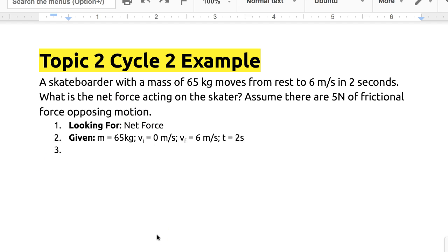What information are we given? Well, the mass of the skater is 65 kilograms, so m equals 65 kilograms. Rest means the initial velocity, so v sub i, i for initial, is 0 meters per second, and the final velocity here is 6 meters per second, and it takes 2 seconds for the skater to get to that speed.